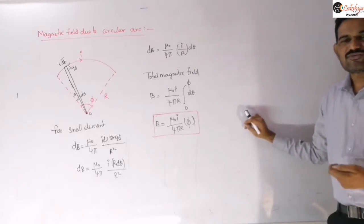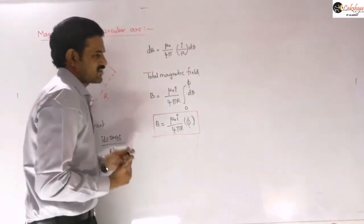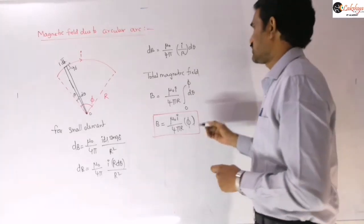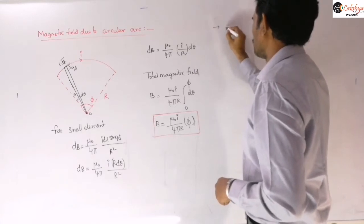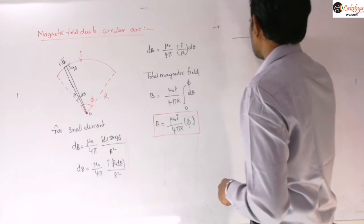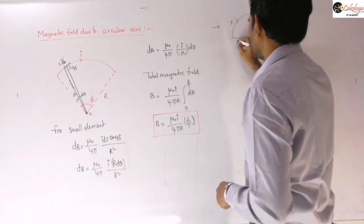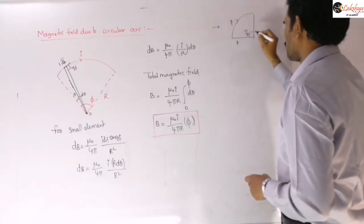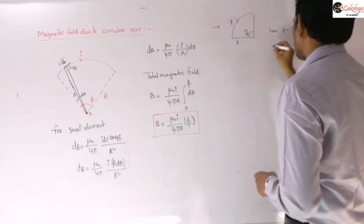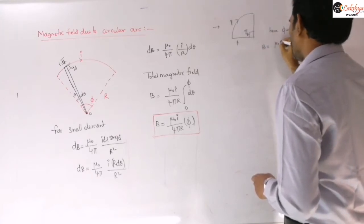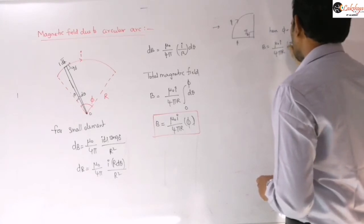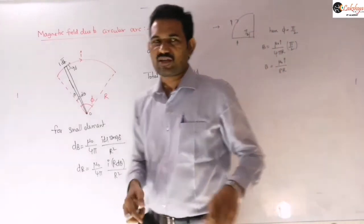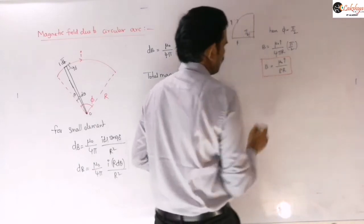For a quarter circle, φ = π/2, so B = (μ₀I/4πr) × (π/2) = μ₀I/8r. This is the magnetic field at the center of a quarter-circle arc.